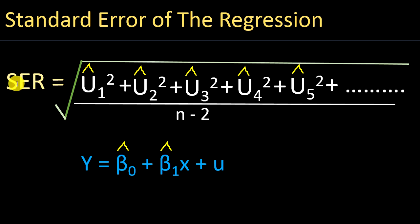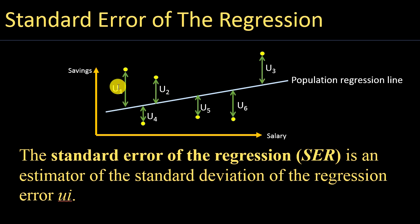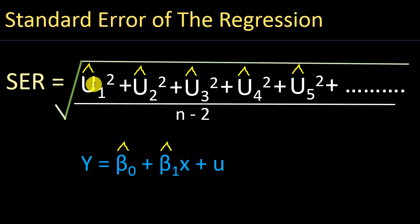To calculate the standard error of the regression, we take the sample error terms, because we cannot calculate the population regression line and therefore cannot calculate the actual error terms based on it. The sample error terms are simply the difference between the actual values in your sample and the sample regression line. We take the sample error terms, square them, add them together, and divide by n minus 2, where n is the number of observations in your sample.